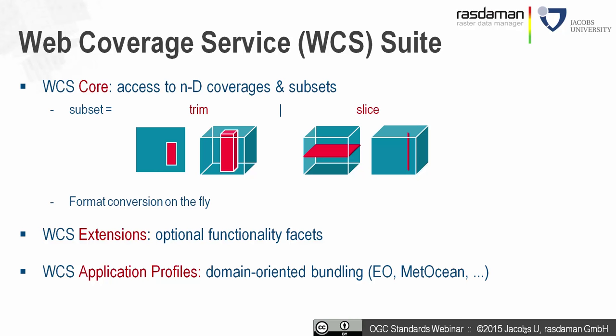Everything else goes into extensions — modular functionality facets that a vendor can choose to implement or not. Any WCS implementation is characterized by the extensions it supports. Sometimes people wanted guidance, which is where application profiles come in. They define domain-oriented bundling: for Earth observation, there's a profile for 2D gridded coverages and time series thereof. Metocean is a draft covering 4D climate data cubes, adding specific extensions like CRS transformation.